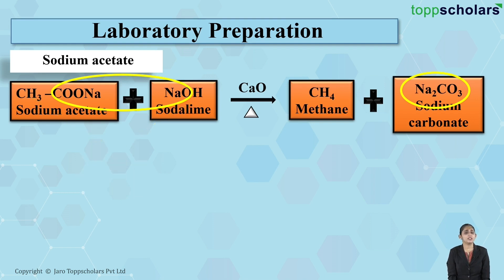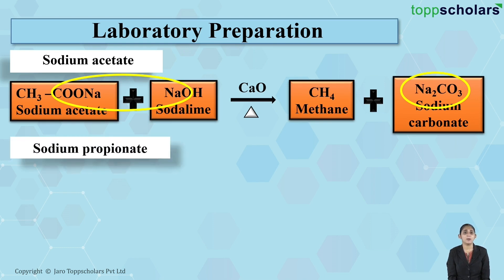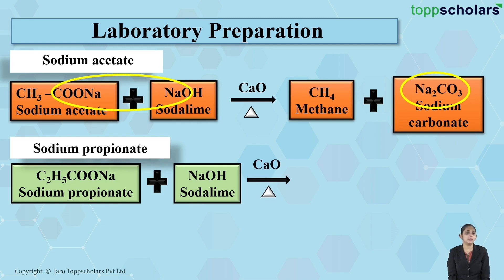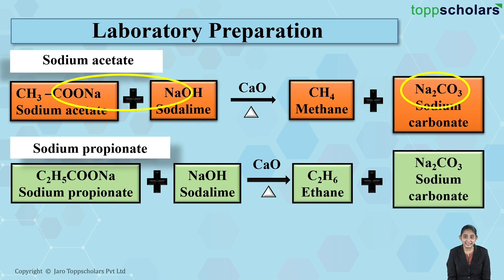Now let's try to prepare ethane using sodium propionate. If you take sodium propionate and react it with soda lime — which is a mixture of sodium hydroxide and calcium oxide — and simply heat sodium propionate with soda lime, it results in the formation of ethane and sodium carbonate.